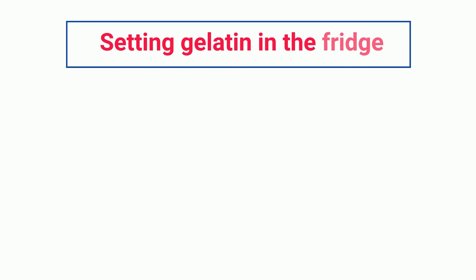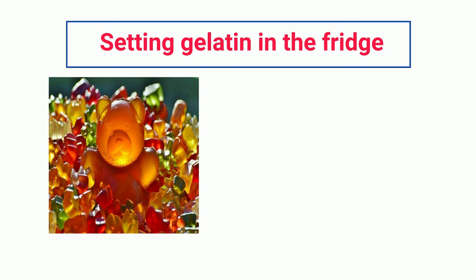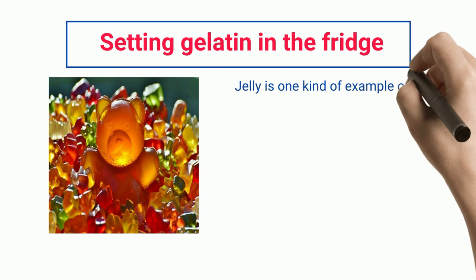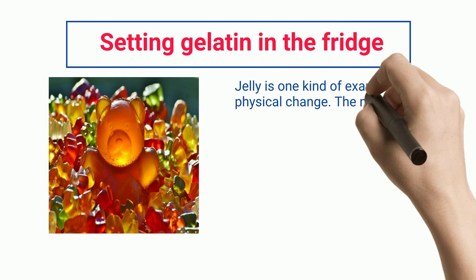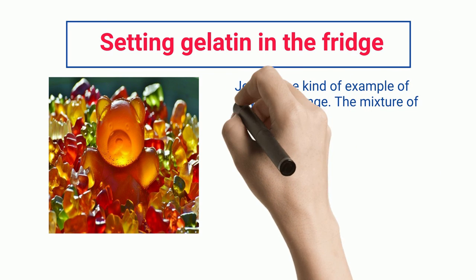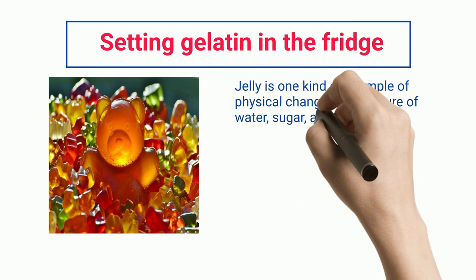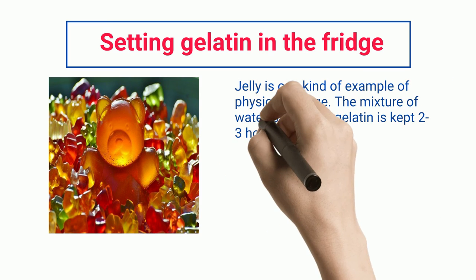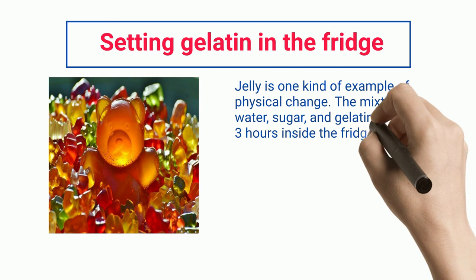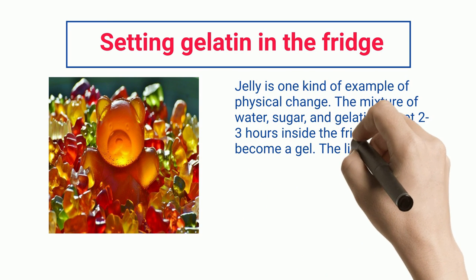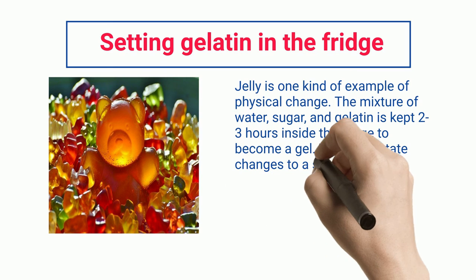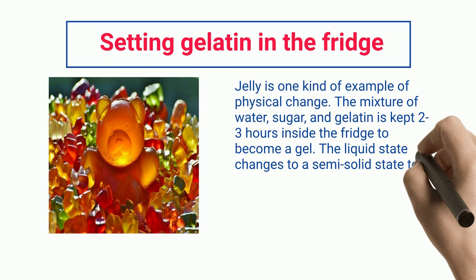Setting gelatin in the fridge: jelly is one kind of example of physical change. A mixture of water, sugar, and gelatin is kept two to three hours inside the fridge to become a gel. The liquid state changes to a semi-solid state to become jelly.